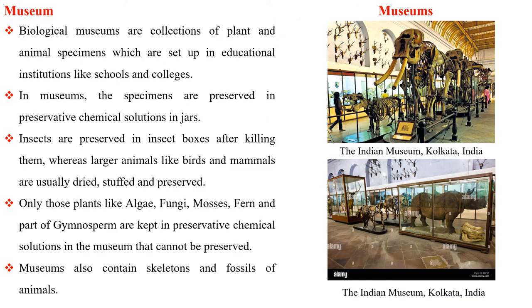Biological museums are a collection of plant and animal specimens set up in educational institutions like schools and colleges. In museums, specimens are preserved in preservative chemical solutions in jars. Insects are preserved in insect boxes after killing them, whereas larger animals like birds and mammals are usually dried, stuffed and preserved. Plants like algae, fungi, mosses, ferns and parts of gymnosperms that cannot be otherwise preserved are kept in chemical solutions. Museums also contain skeletons and fossils of animals.